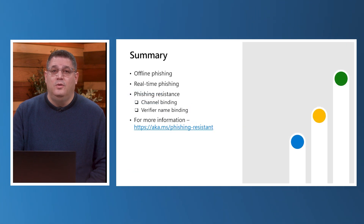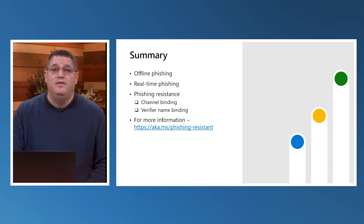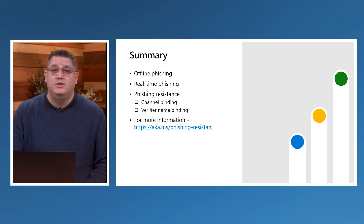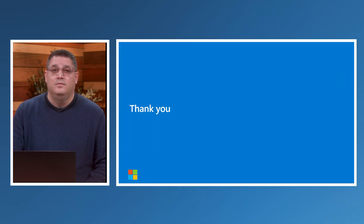In this video, we have learned about the types of phishing attacks and the two ways phishing resistance can be achieved: channel binding and verifier name binding. For more information, please go to aka.ms/phishingresistant. Thank you.